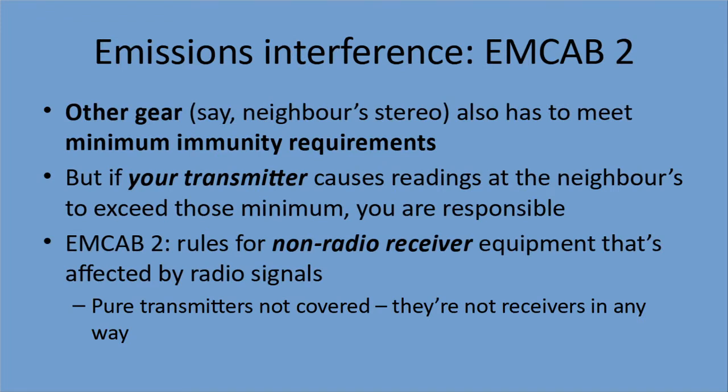Next on emissions is interference, and that's covered by a set of rules called MCAB 2 — again, a trivial little thing for you to memorize. Emissions interference really covers two parts: one is what is your radio spitting out, and the other is how devices that are not your radio — say in your living room or at your neighbor's house — are affected. Those devices at your neighbor's or in your house that are not radio have to have a certain level of immunity that's required, and it's part of testing when people go through CSA or whatever else.